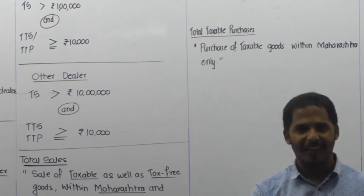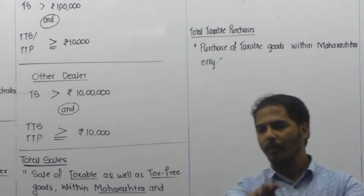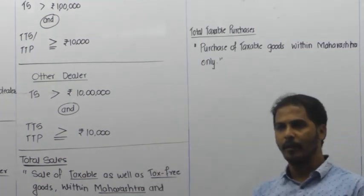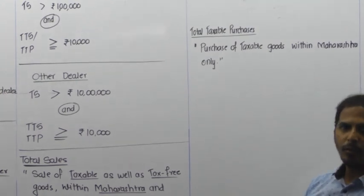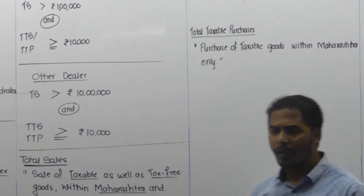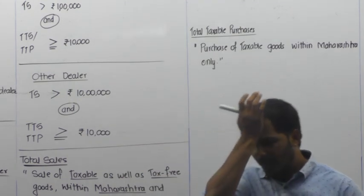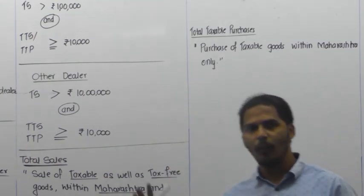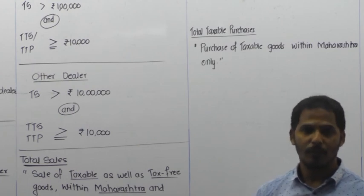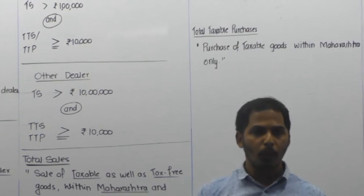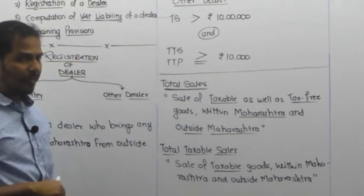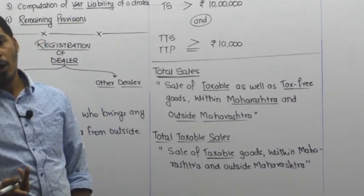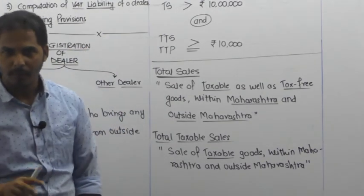A common student error: while learning the process, when a question shows total sales of 10 lakhs, students say 'this is other dealer' based on the sales figure. Wrong! To identify the dealer type, you check where the goods are purchased from — not the sales amount. If goods are purchased from outside Maharashtra, the dealer is an importer. If not, other dealer. Then apply conditions: 1 lakh / 10 lakh and 10,000. Are you clear? Please copy this.